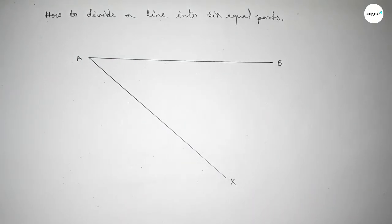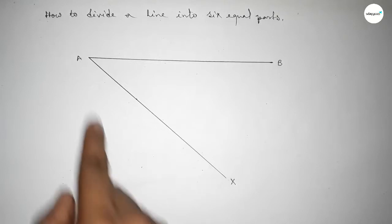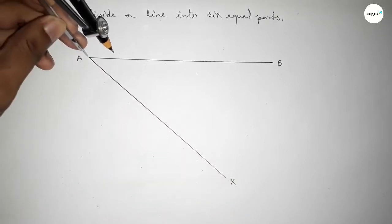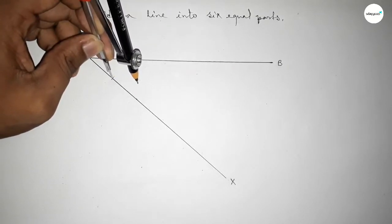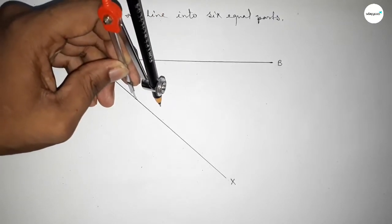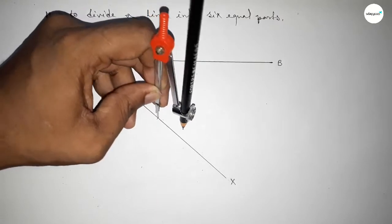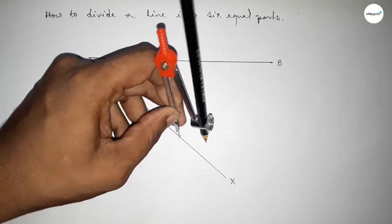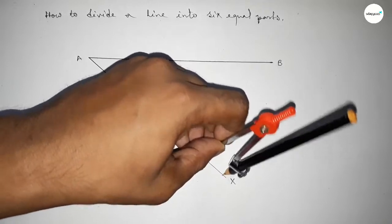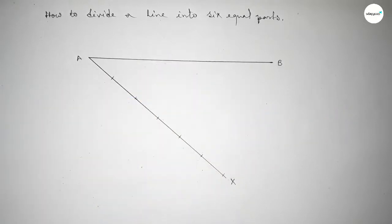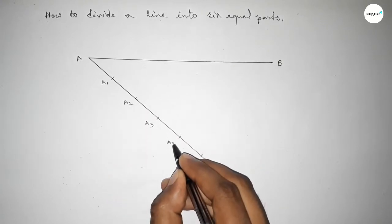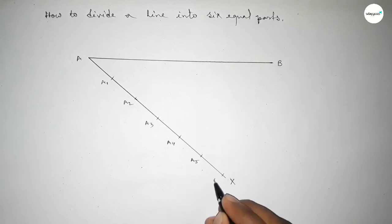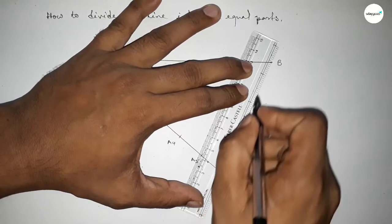Now joining this line and taking point X here. We are marking the line AX into six equal parts, so taking any length and marking the line AX this way. We mark the line AX into six equal parts using the compass, taking points A1, A2, A3, A4, A5, and A6.